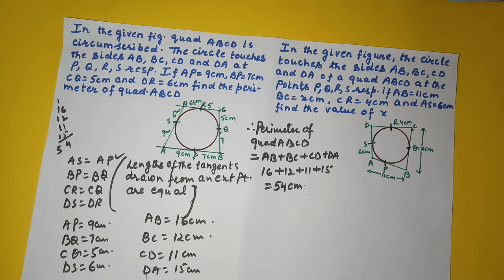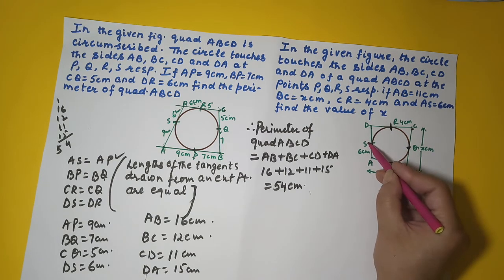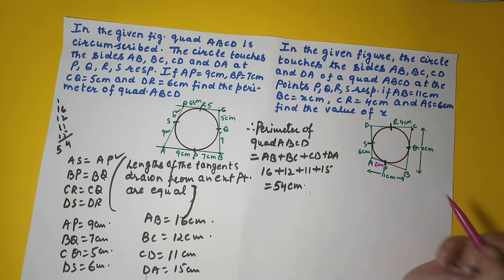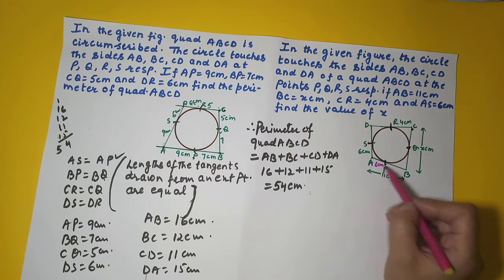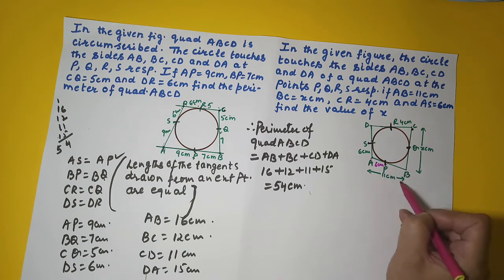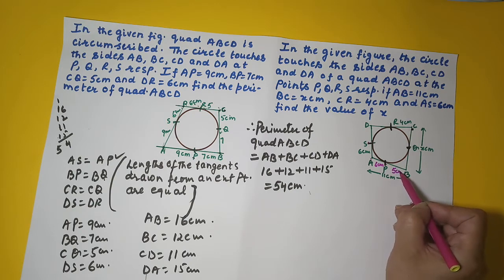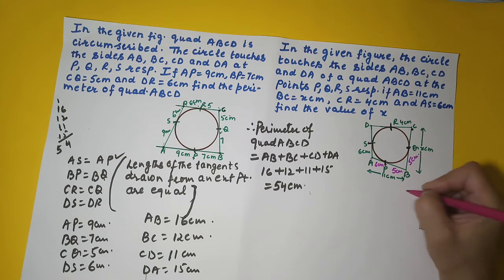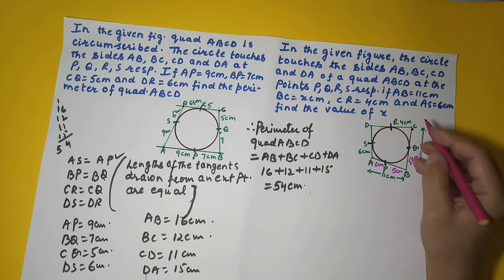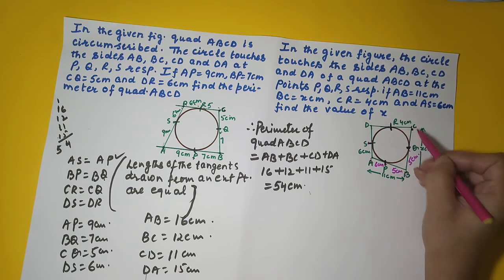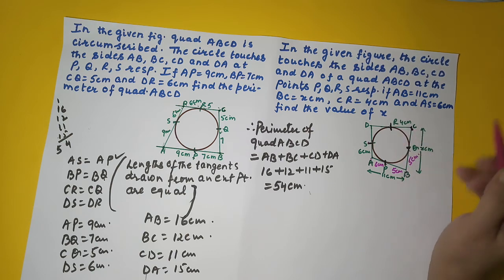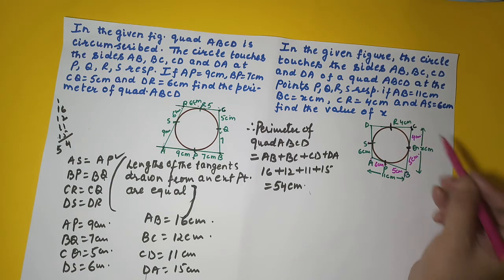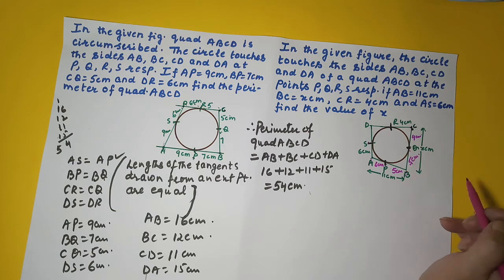We use the same theorem. Since AS is 6, AP is also 6 centimeters — lengths of tangents from an external point are equal. But AB is 11, so BP is 11 minus 6 = 5 centimeters. Since BP equals BQ, BQ is also 5 centimeters. Similarly, CR equals CQ, so CQ is also 4 centimeters. Therefore X equals BQ plus CQ, which is 5 plus 4 = 9 centimeters.